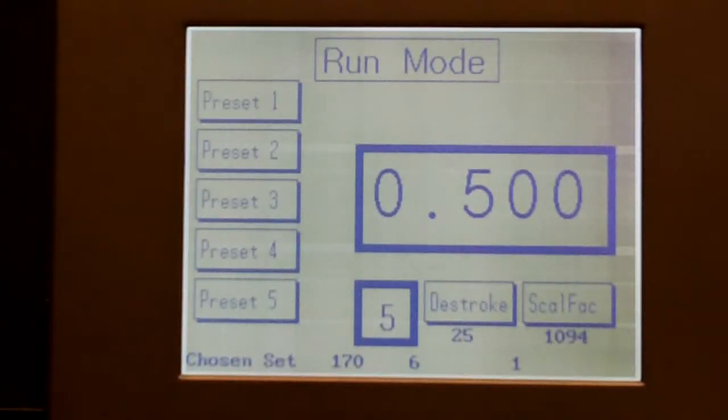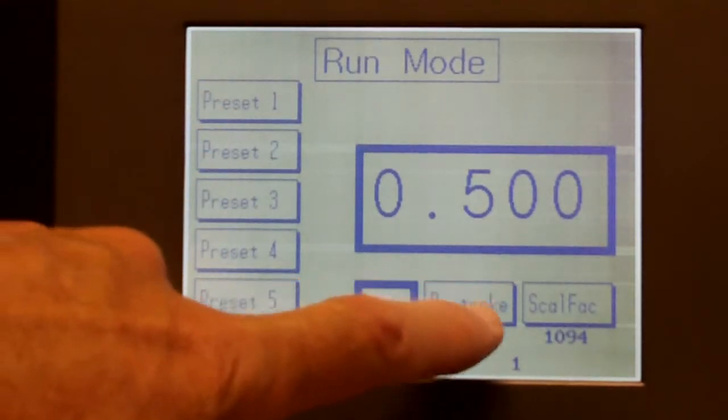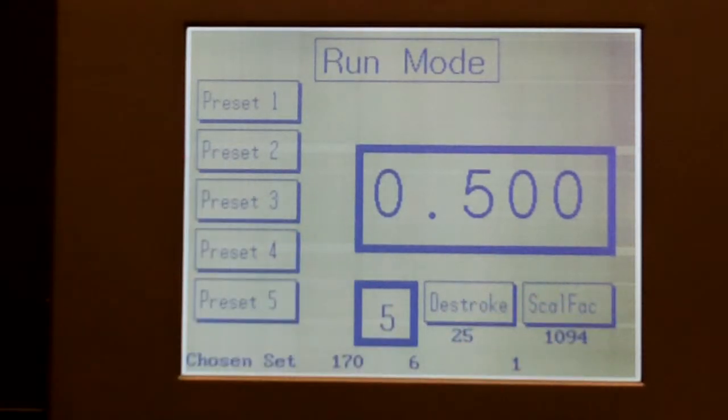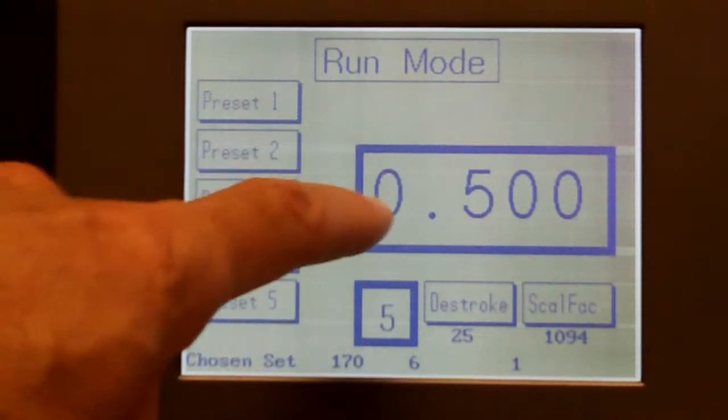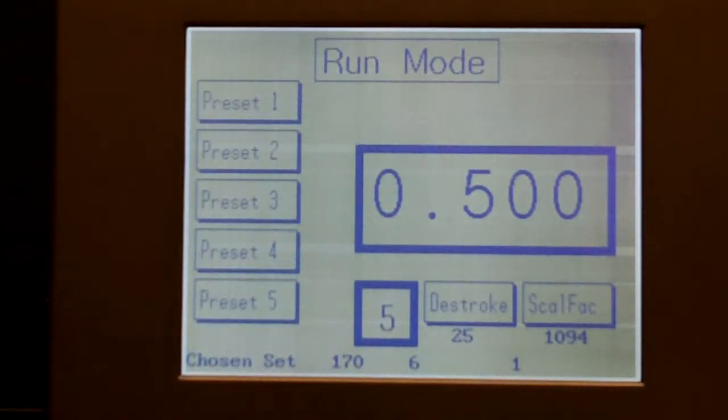A touchscreen display replaces the small display previously used. The touchscreen display allows operation of the presets, D-stroke, and has a large display for the measuring system and takes the existing sensors.